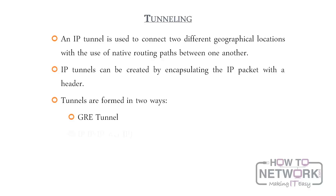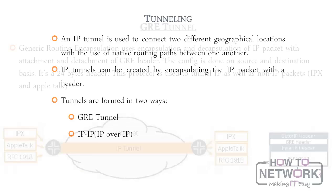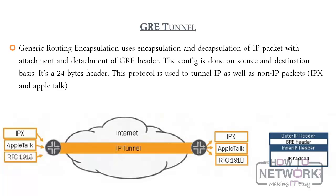Generic routing encapsulation, or GRE, uses encapsulation and decapsulation of IP packets with attachment and detachment of GRE headers. The config is done on a source and destination basis. It is a 24-byte header. The protocol is used to tunnel IP as well as non-IP packets, such as IPX and AppleTalk.